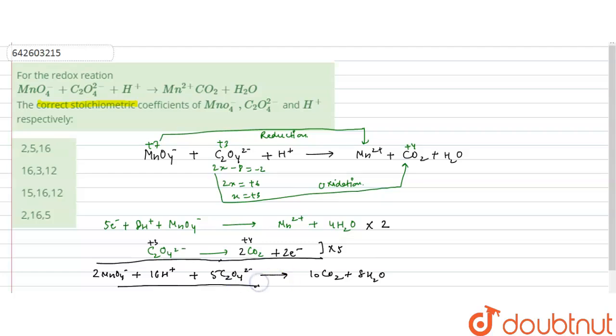So this is the net balanced reaction. The stoichiometric coefficients of MnO4⁻, C2O4²⁻, and H⁺ are asked. For MnO4⁻, the coefficient is 2; for C2O4²⁻, the coefficient is 5; and for H⁺, the coefficient is 16. So it would be 2, 5, and 16. The first option is the correct option: 2, 5, and 16. I hope you understood the solution. Thank you.